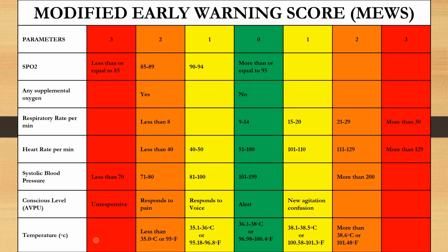The last vital parameter is temperature. If the temperature is between 36.1 to 38°C (96.98 to 100.4°F), give a score of 0. If it is between 35.1 to 36°C (95.18 to 96.8°F), give a score of 1. If the body temperature is less than 35°C (95°F), give a score of 2. On the other hand, if the body temperature is between 38.1 to 38.5°C (100.58 to 101.3°F), give a score of 1. If it is more than 38.6°C (101.48°F), give a score of 2.